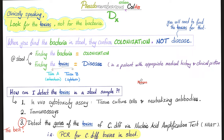How can I detect the toxins in the stool sample? We have many options, and number three is the best. One: you can do an in vivo cytotoxicity assay — tissue culture with neutralizing antibodies against the toxin confirms the presence of toxins. Two: commercially available enzyme immunoassays, which are not very sensitive. Three — the best option: detect the genes that code for the toxins of Clostridium difficile using nucleic acid amplification tests such as PCR, polymerase chain reaction. We are not looking for the bacteria; we're looking for the bacterial toxins in the patient's stool, in a patient who has clinical signs and symptoms and relevant medical history.